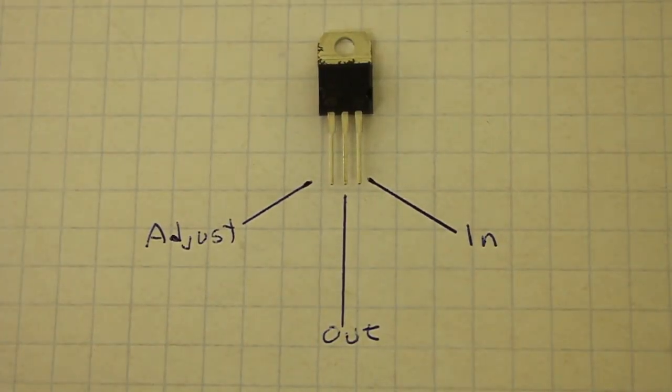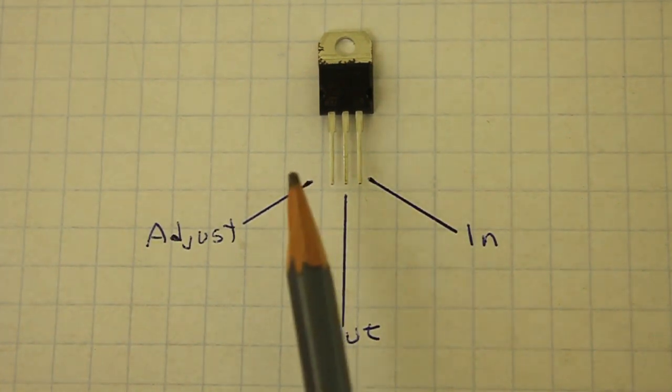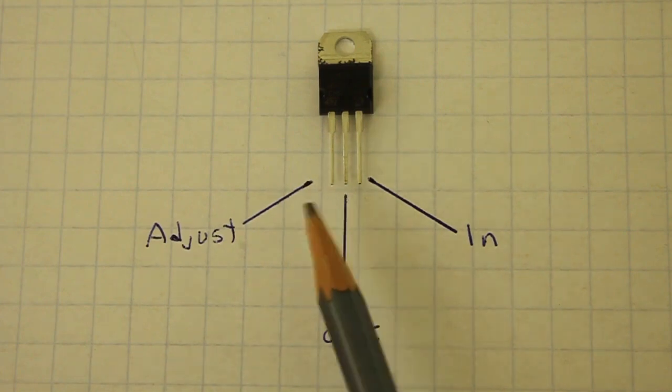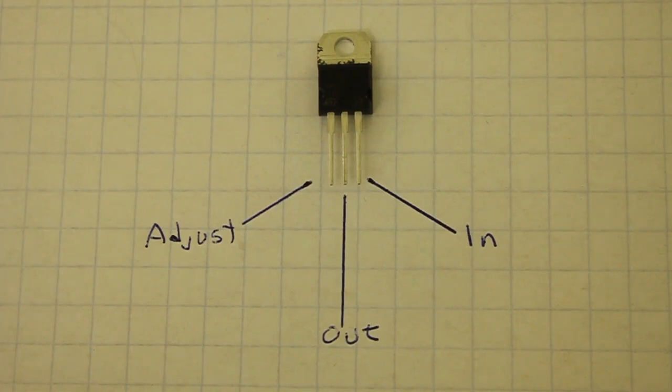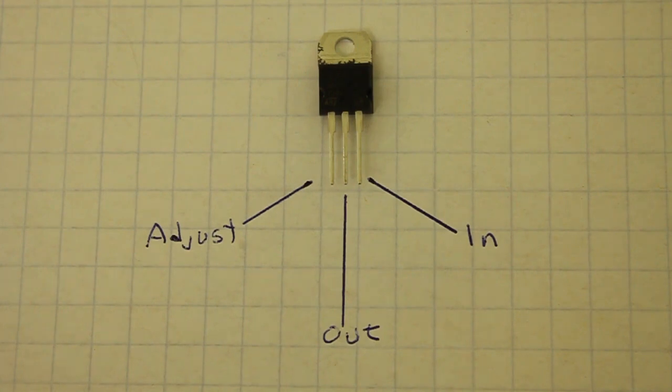The LM317AC is very easy to use. It only has 3 pins, which are adjust, output and input. This AC is normally used as a variable voltage regulator, but it also can be wired to produce a constant current output.